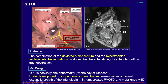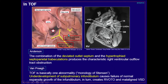As you can see here, this is an anterocephalad deviated outlet septum. The original site of the outlet septum is indicated here, and this anterocephalad deviation produces a larger hole between the two ventricles and produces overriding of the aorta. Dr. Anderson and Dr. Bampra had different opinions on what causes right ventricular outflow obstruction in tetralogy of Fallot. Dr. Anderson thinks that the combination of the deviated outlet septum and septoparietal trabeculations produces the right ventricular outflow obstruction. But Dr. Bampra thinks that underdevelopment of the suprapulmonary infundibulum causes failure of normal expansile growth of the infundibulum, which creates right ventricular outflow obstruction and malaligned VSD.